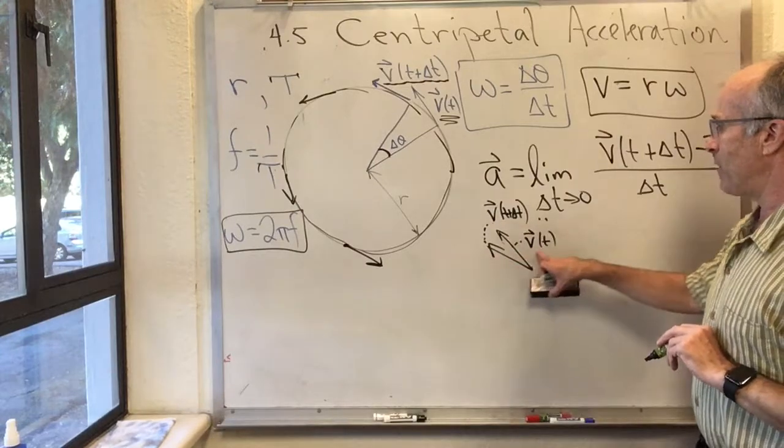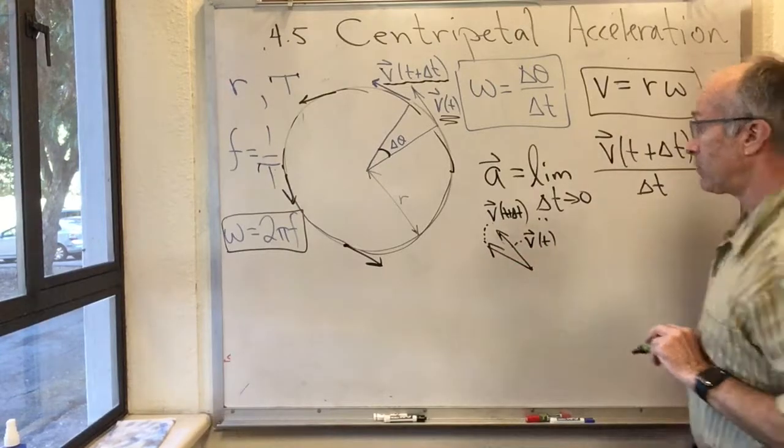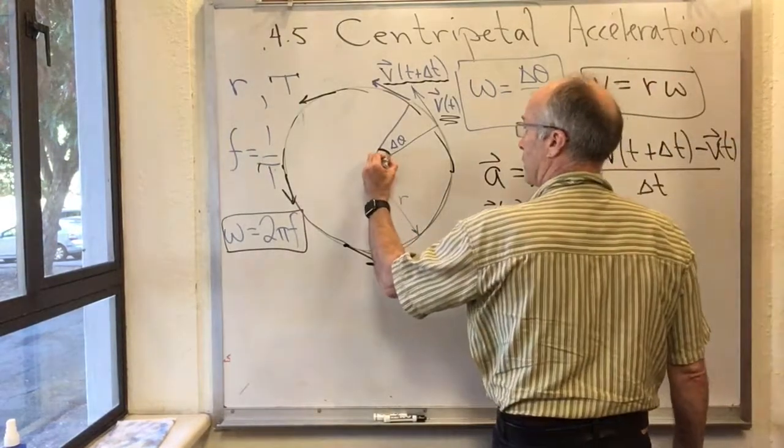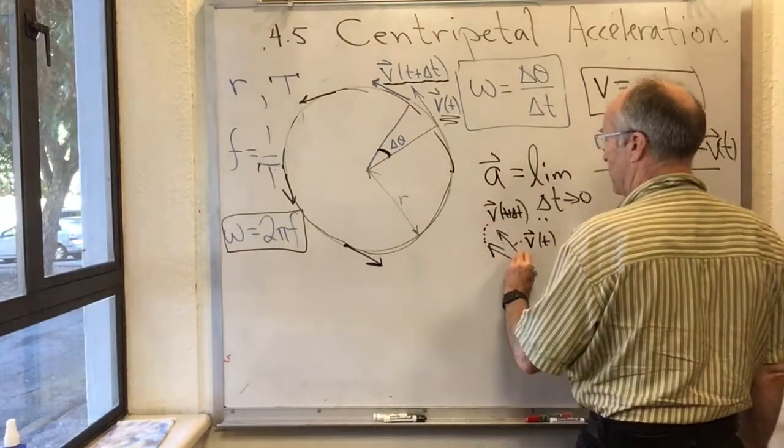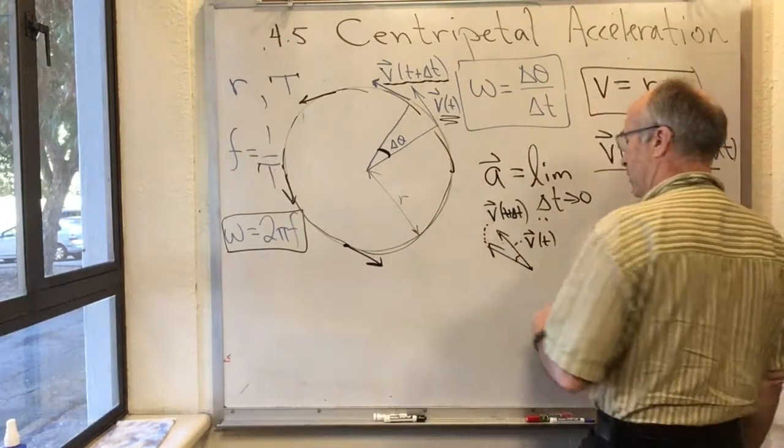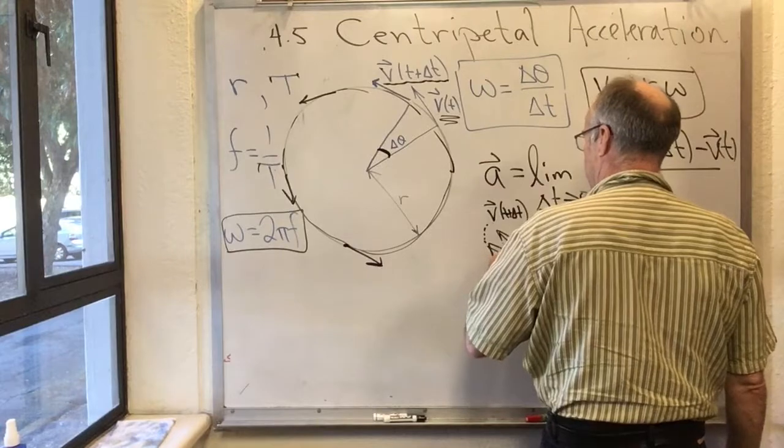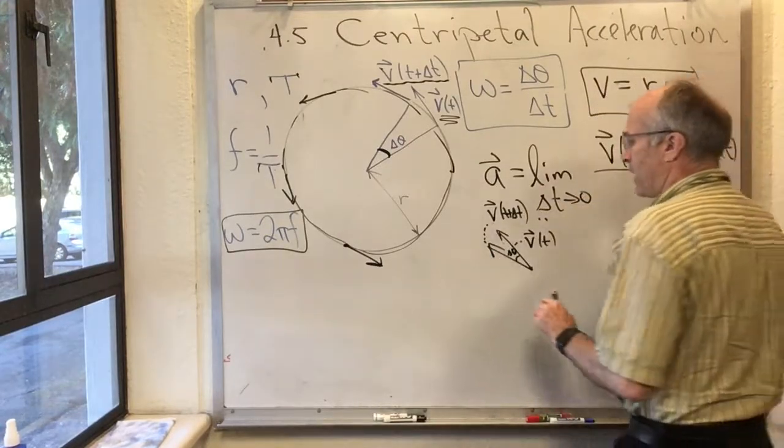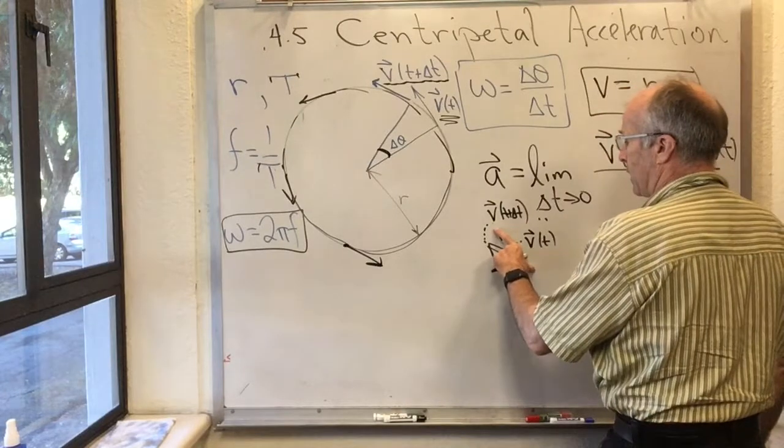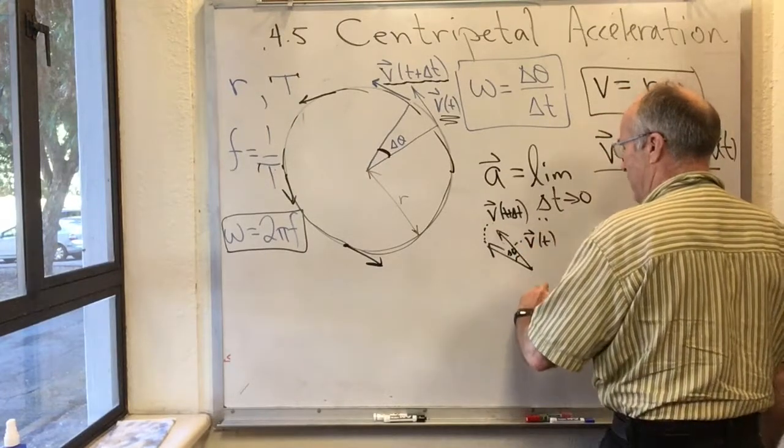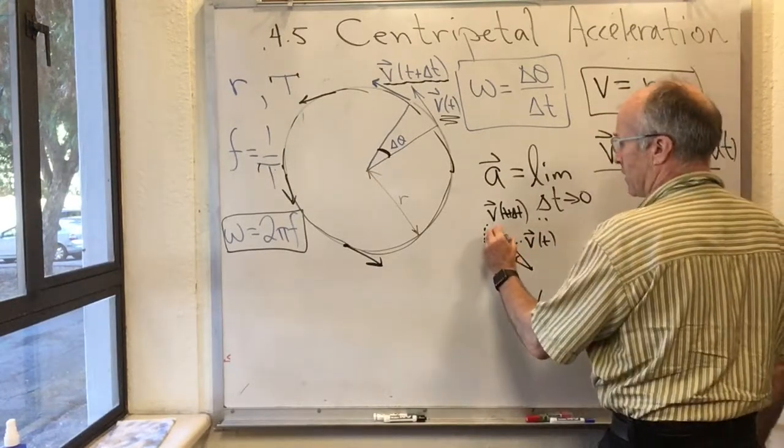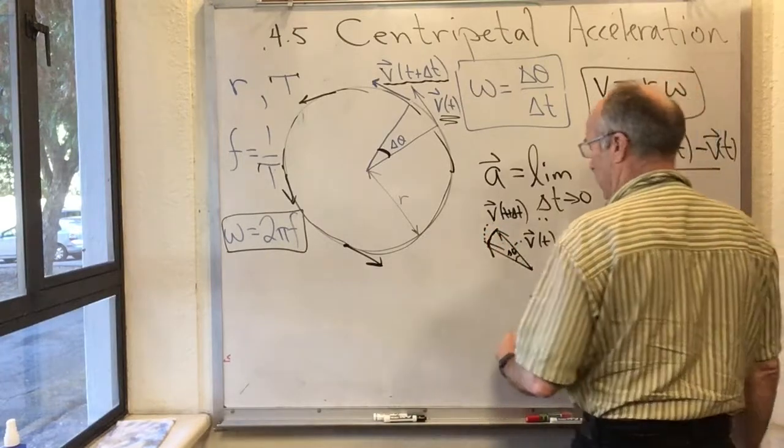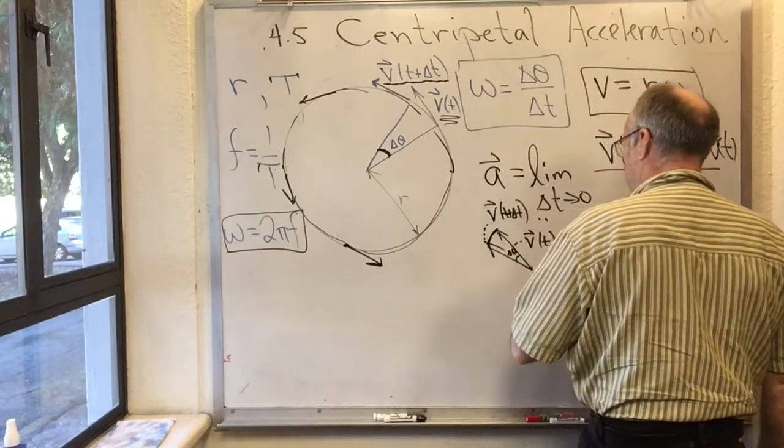V at t plus delta t is that one, and v at t is that one. Now, this angle here, it's not too hard to convince yourself, is the same as that angle there. So that's delta theta. And if delta theta is in radians, and this vector has length v, then this distance, this actual arc distance right here, is v delta theta.